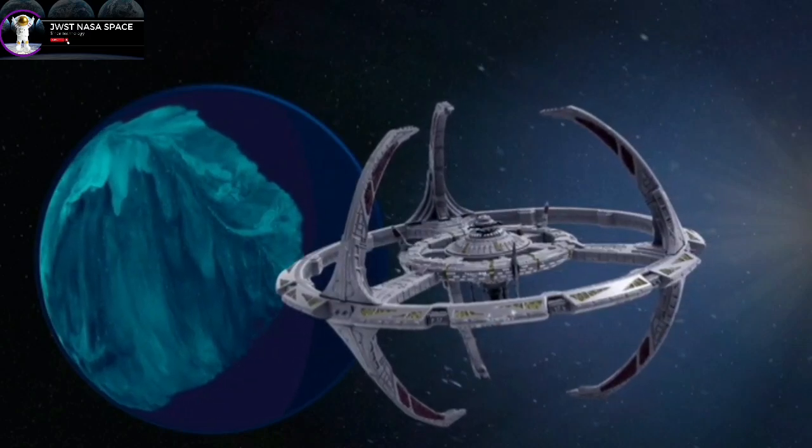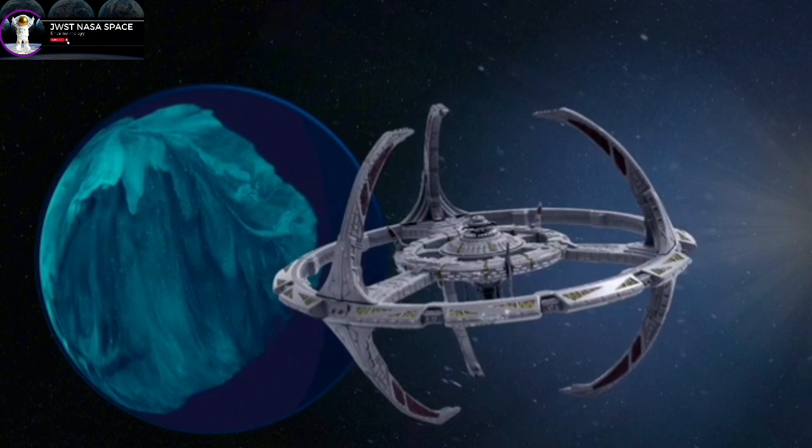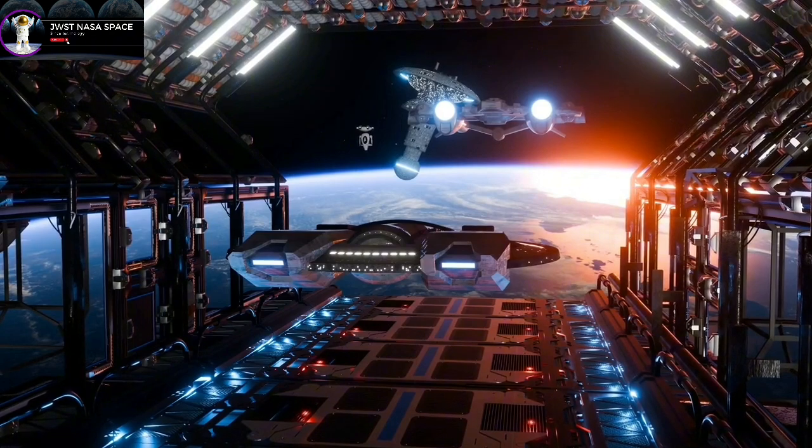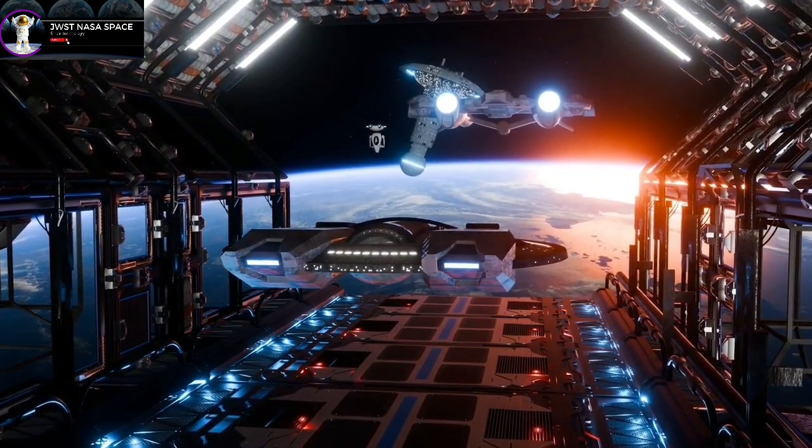The James Webb Telescope has captured the clearest picture of Proxima b in history, revealing stunning discoveries about this potentially habitable exoplanet.